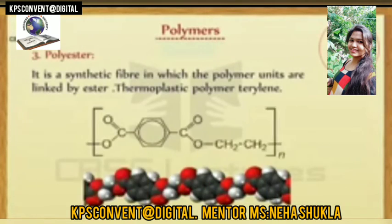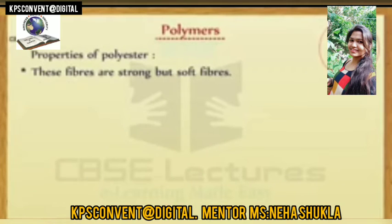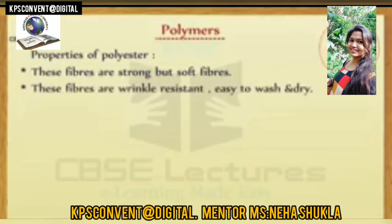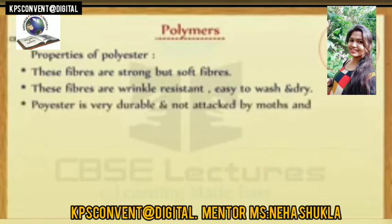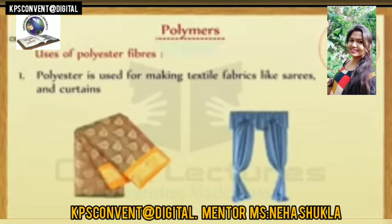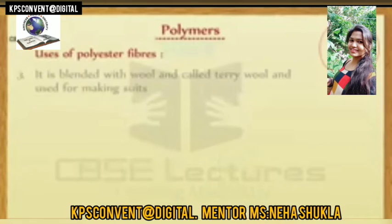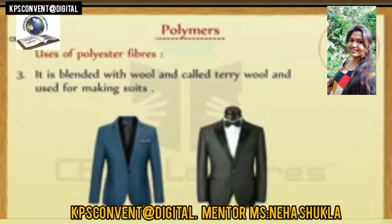Polyester: it is a synthetic fiber in which the polymer units are linked by ester bonds. It is a thermoplastic polymer. Terylene is a very popular polyester fiber. Properties of polyester: these fibers are strong but soft. These fibers are wrinkle resistant, easy to wash and dry. Polyester is very durable and not attacked by moth and ordinary chemicals. Polyester is used for making textile fabrics like sarees and curtains. It is blended with cotton and called terry cotton, which is used for making shirts, trousers, and other dresses. It is blended with wool and called terry wool, and used for making suits.